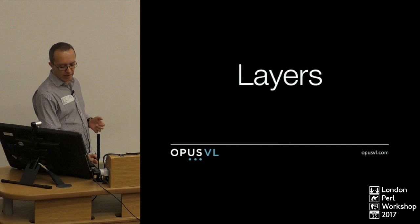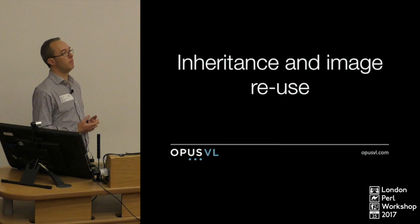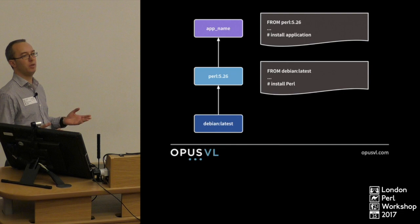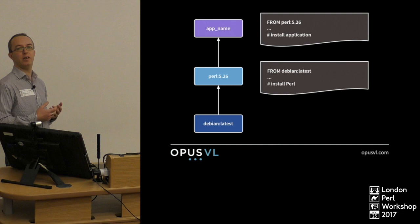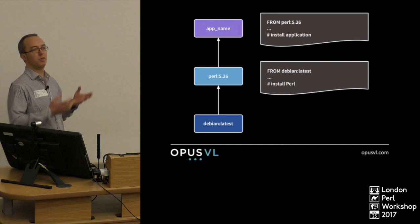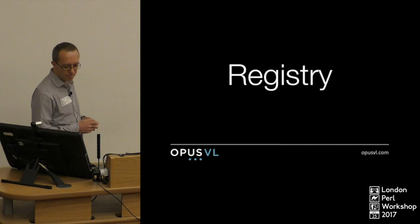The next thing you'll come across is layers. Layers in Docker give us a way of reusing images and having inheritance — you can build one image on top of another. So you might start with a Debian image, then build a new image that is a Perl environment with system libraries needed for your CPANM modules. On top of that, once you've got Perl installed, you can build an application image.